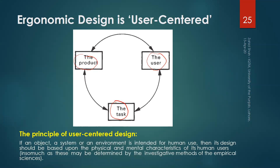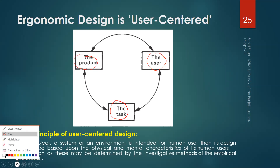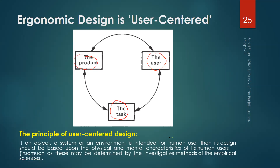If an object, a system, or an environment is intended for human use, then its design should be based upon the physical and mental characteristics of its human users. In order to make sure that this is happening, you may need investigative methods of empirical science.